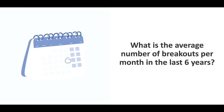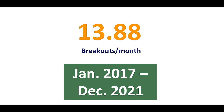The first question was: what's the average number of breakouts per month over the last six years? Knowing that 2022 was a bearish market, I split the timeline to see how many happened before 2022 and in 2022. The result was 13.88 breakouts per month between January 2017 and December 2021 — a very promising number proving that breakouts happen often and are worth looking for.